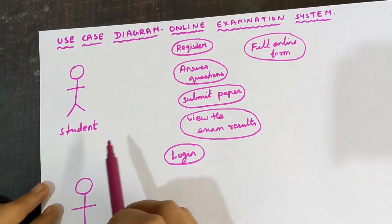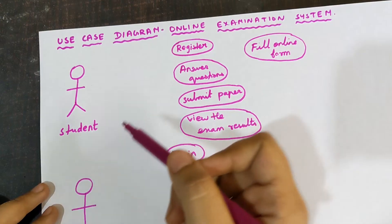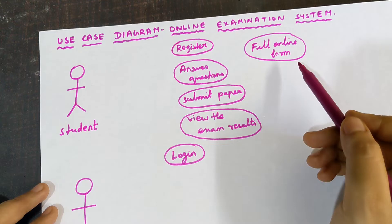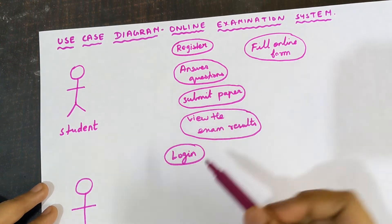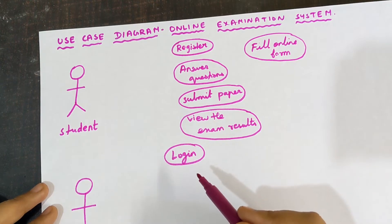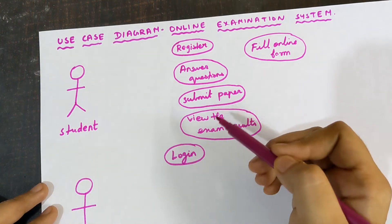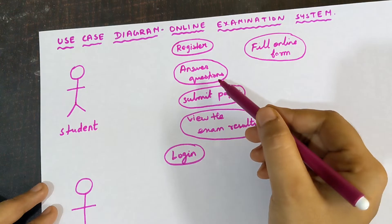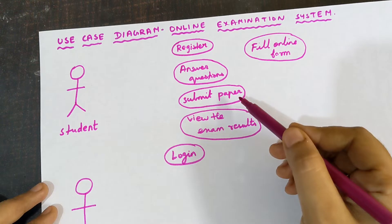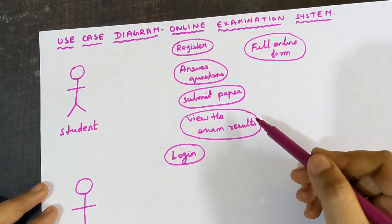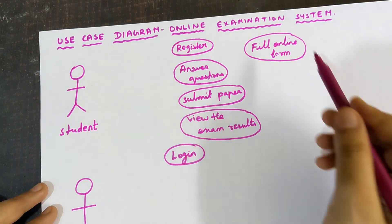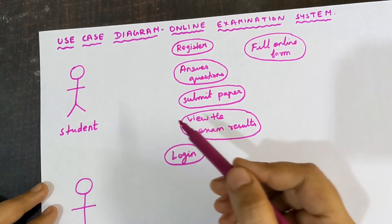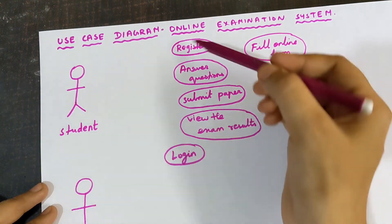The process is: first, the student registers on the portal by filling in the online form with their details. Once verified, they can log in using their credentials to enter the portal. Inside the portal they see the question paper, answer all questions, then submit the answer sheet. After a few days the marks are available and the student can view the exam results.